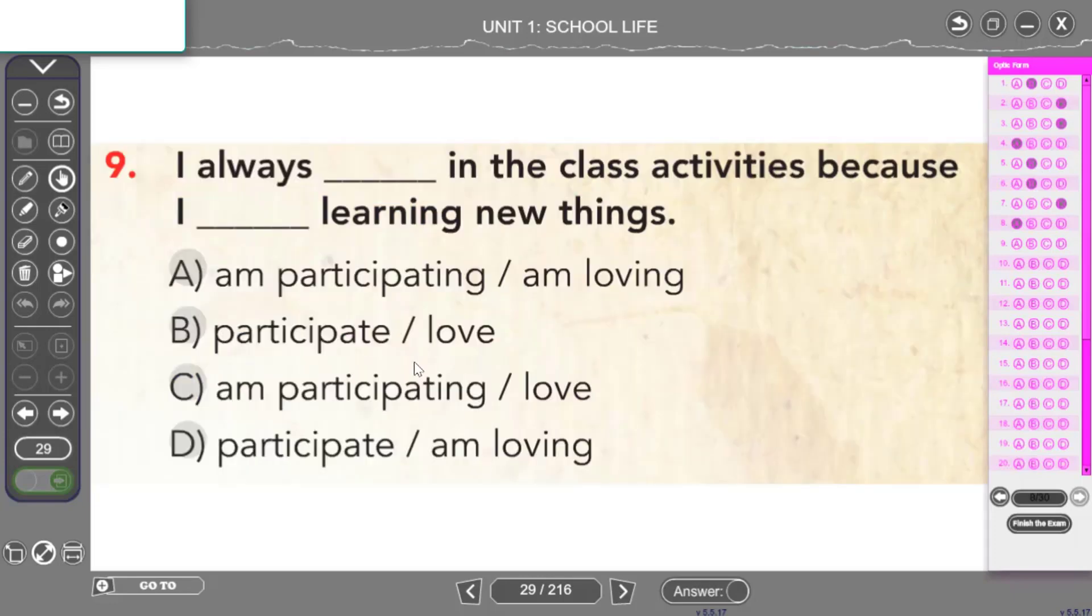I always, yine bir sıklık zarfı görüyoruz. Ben her zaman katılırım. Neye katılırım? In the class activities sınıf aktivitelerine katılırım. Because I like learning new things. Çünkü yeni şeyler öğrenmeyi severim şeklinde bir cümle kurmamız gerekiyor. Peki nasıl kuracağız? Hangi kuralları uygulayacağız? Bakalım hep beraber. Öznem I. Geniş zamanda I öznesiyle cümle yazmam gerekiyor. Ne yapacağım? Fiilimin yalın halini kullanacağım. Yani participate yazacağım ilk boşluğa. İkinci boşlukta ise yeni şeyler öğrenmeyi severim yazacağım. Yine öznem I olduğu için yine fiilimin yalın halini kullanacağım. Yani cevabım I always participate in the class activities because I love learning new things şeklinde olacak.